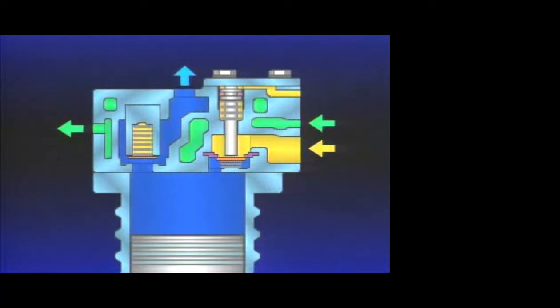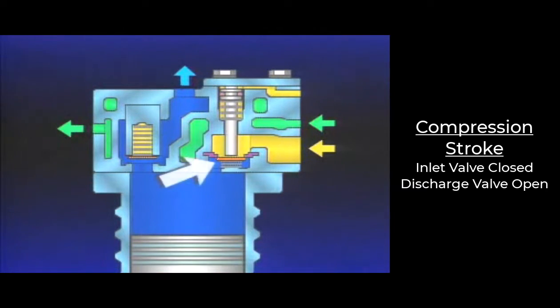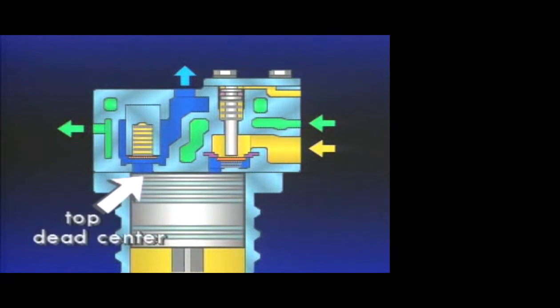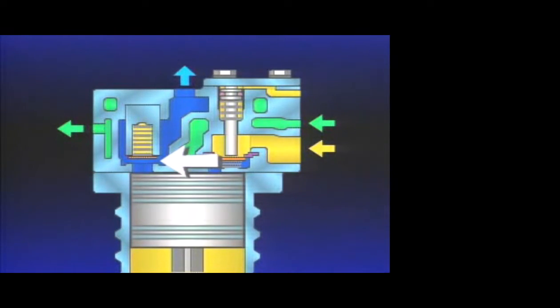As the piston begins its compression stroke, the inlet valve closes, and the air in the cylinder bore is compressed as the piston approaches top dead center. During air compression, the discharge valve opens, allowing compressed air to flow from the cylinder bore past the open valve and out the discharge port into the supply reservoir.